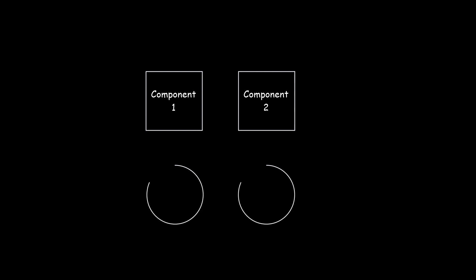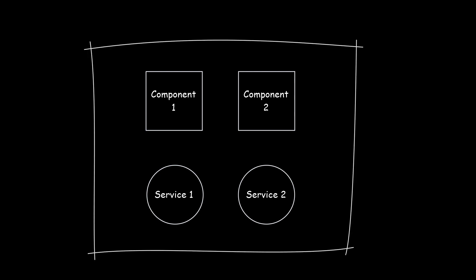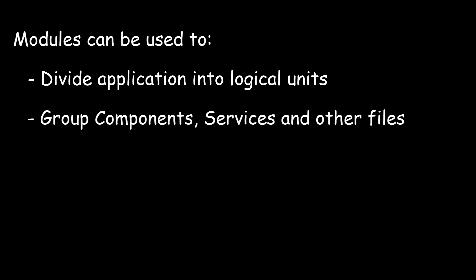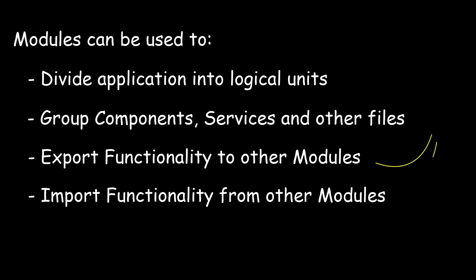Let's assume I have two components — component one and component two — and two services — service one and service two. Now in order to group these services and components together, I would create a wrapper around them, which is called a module. A module is Angular's way of grouping together common related functionalities. A module can divide the application into logical units, group components, services, and other files, export functionality to other modules, and import functionality from other modules.